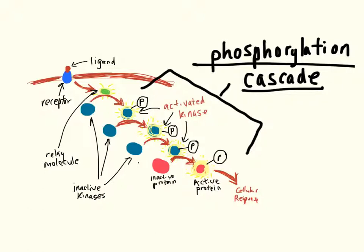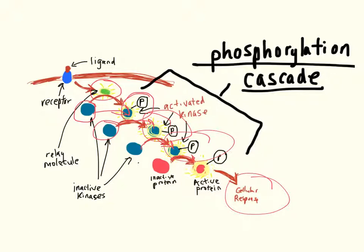In this example, we have the relay molecule causing the activation of one kinase by phosphorylation. This phosphorylated form of the kinase is active and can then phosphorylate other kinases, which then become active and then can activate other kinases, eventually leading to a step that will cause the cellular response.